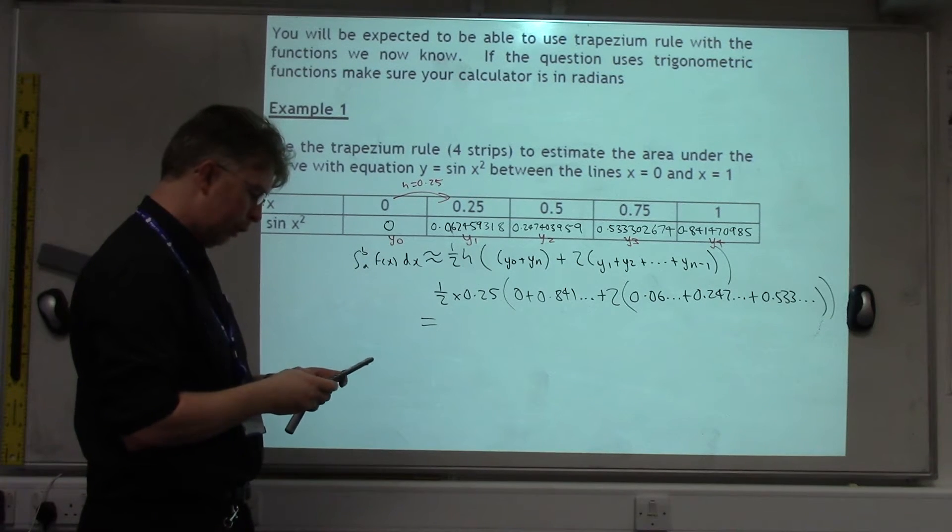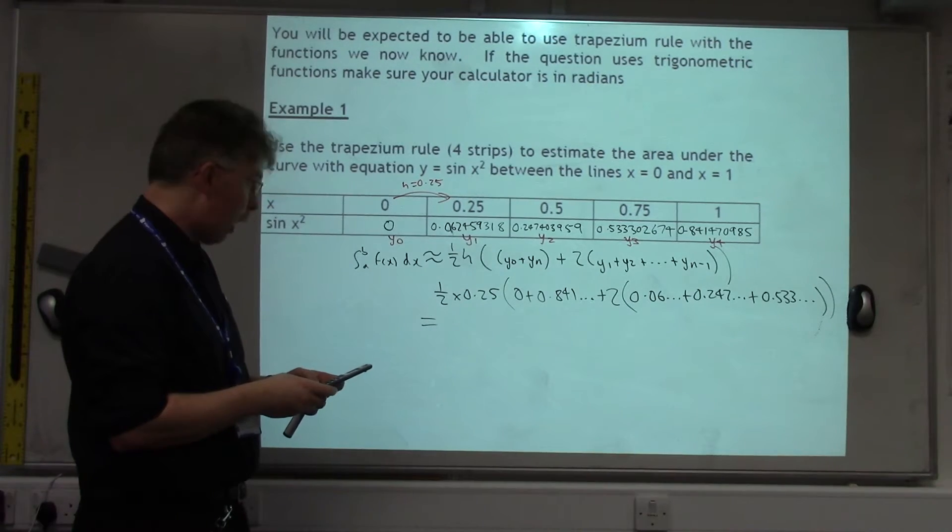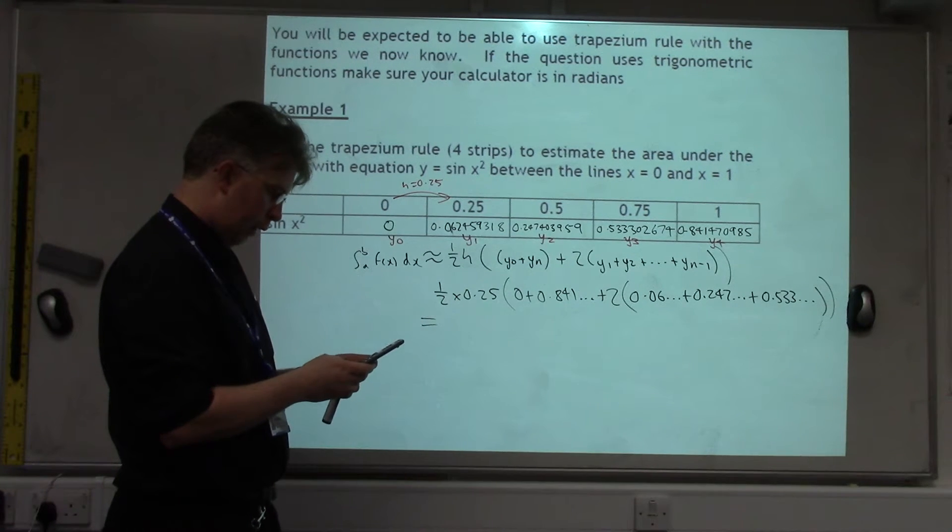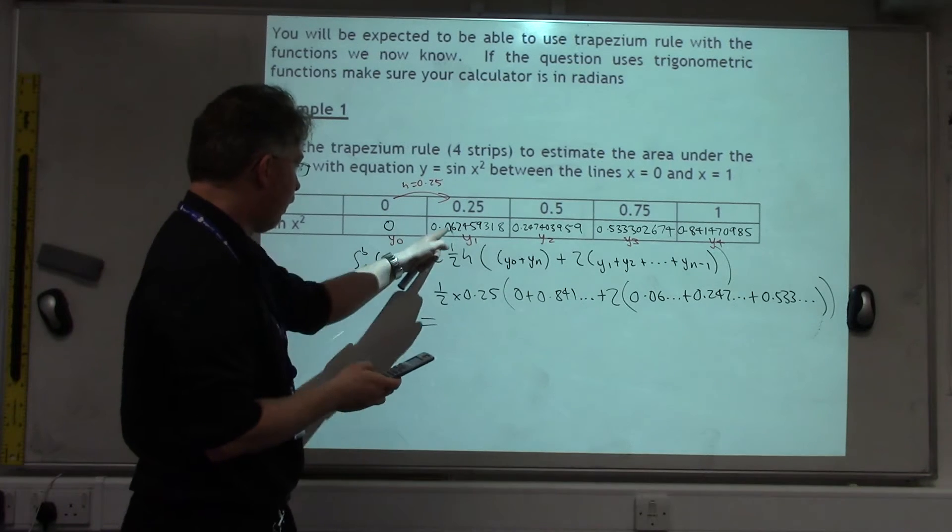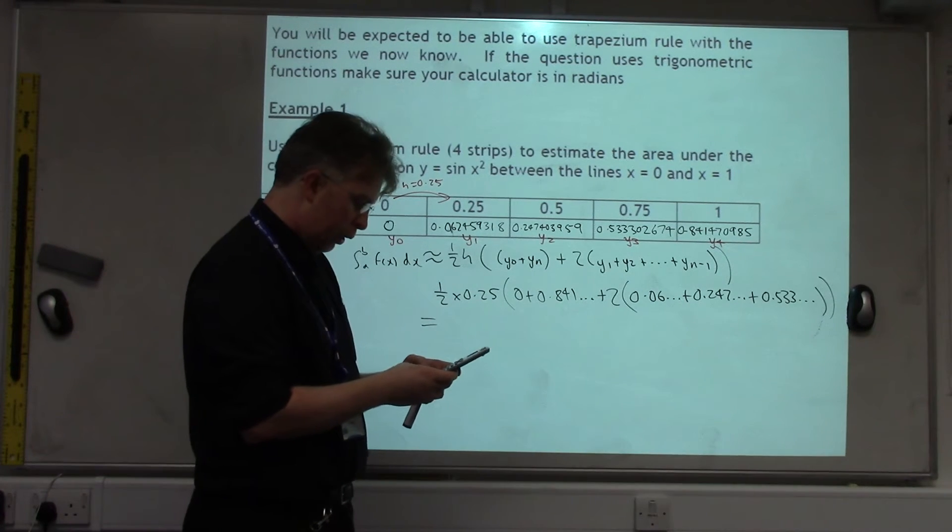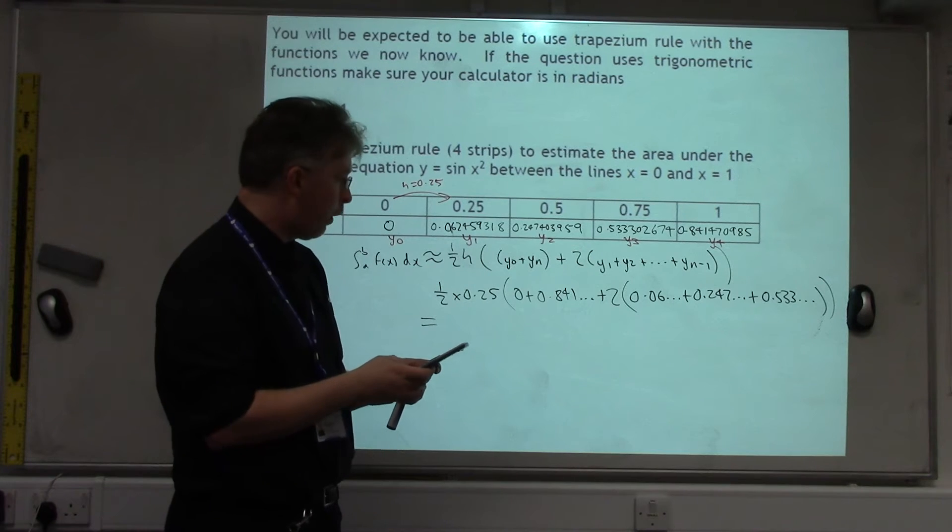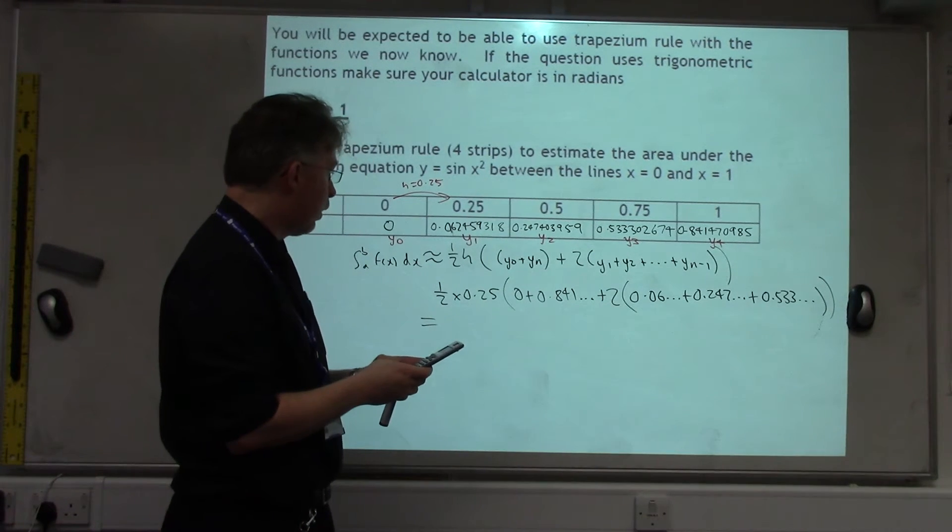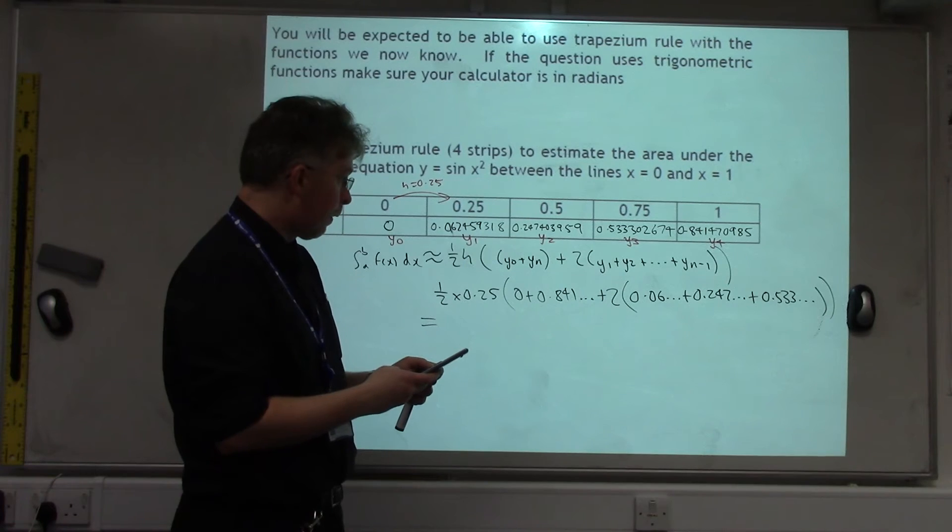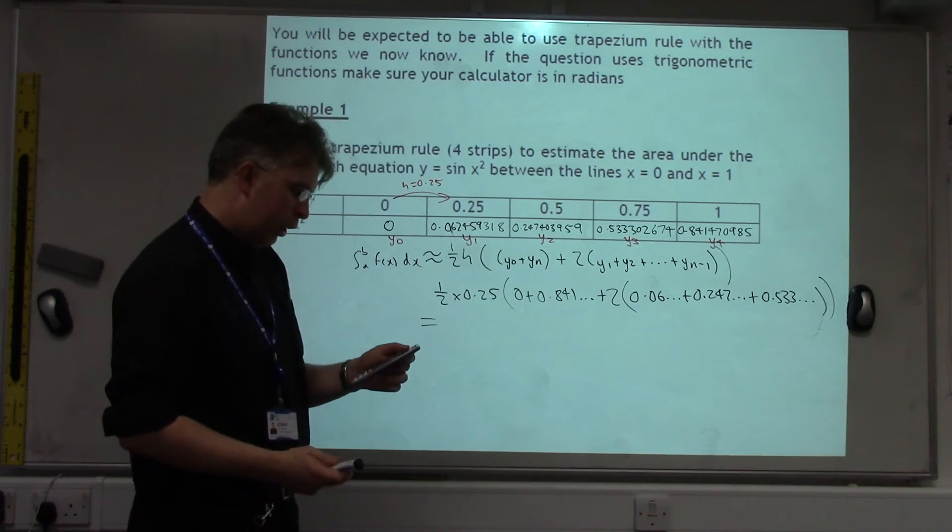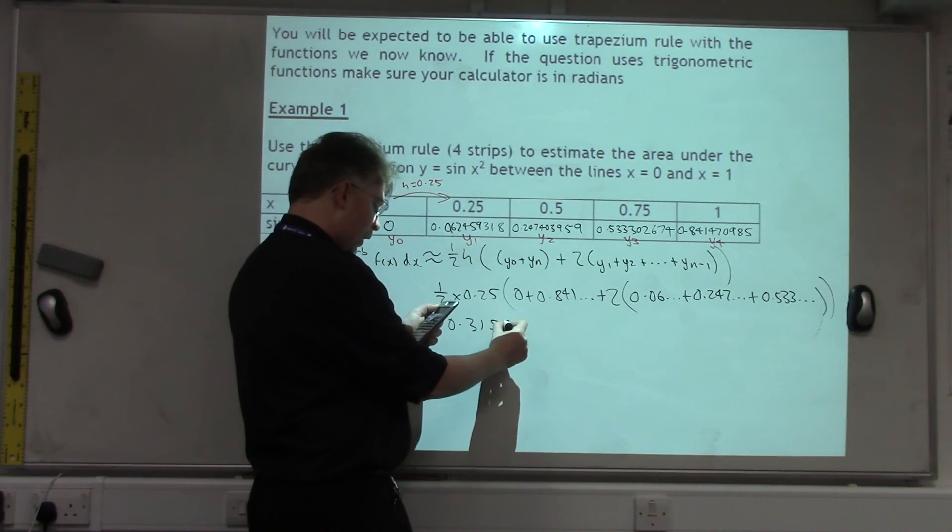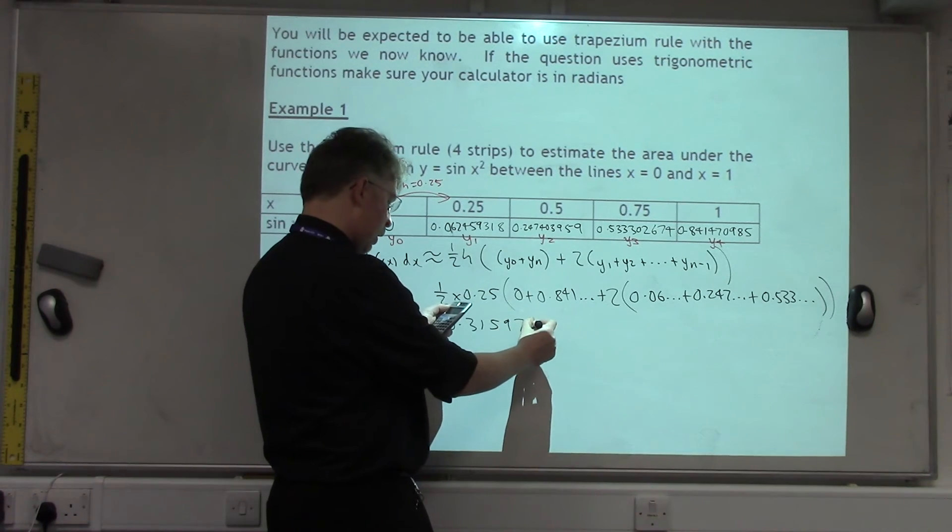So half times 0.25, open bracket, 0 plus 0.841470985, plus 2 times open bracket 0.062459318 plus 0.247403959 plus 0.533302674, close brackets. I'm going to give my answer to 5 decimal places: 0.315975.